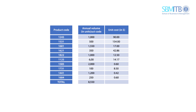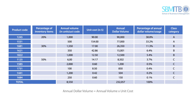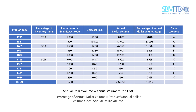First, we need to define the annual dollar volume for each product, calculated as the annual volume in units multiplied by unit cost. The annual dollar volume for each product can be seen in the table. This annual dollar volume is then divided by the total annual dollar volume to get the percentage of annual dollar volume, or usage.